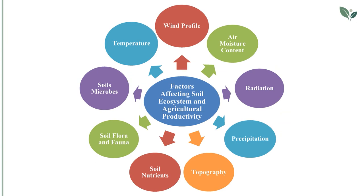But which are the main factors that can affect the soil ecosystem and the agricultural productivity? Wind profile, air moisture content, radiation, precipitation, topography, soil nutrients, soil flora and fauna, soil microbes, and temperature.